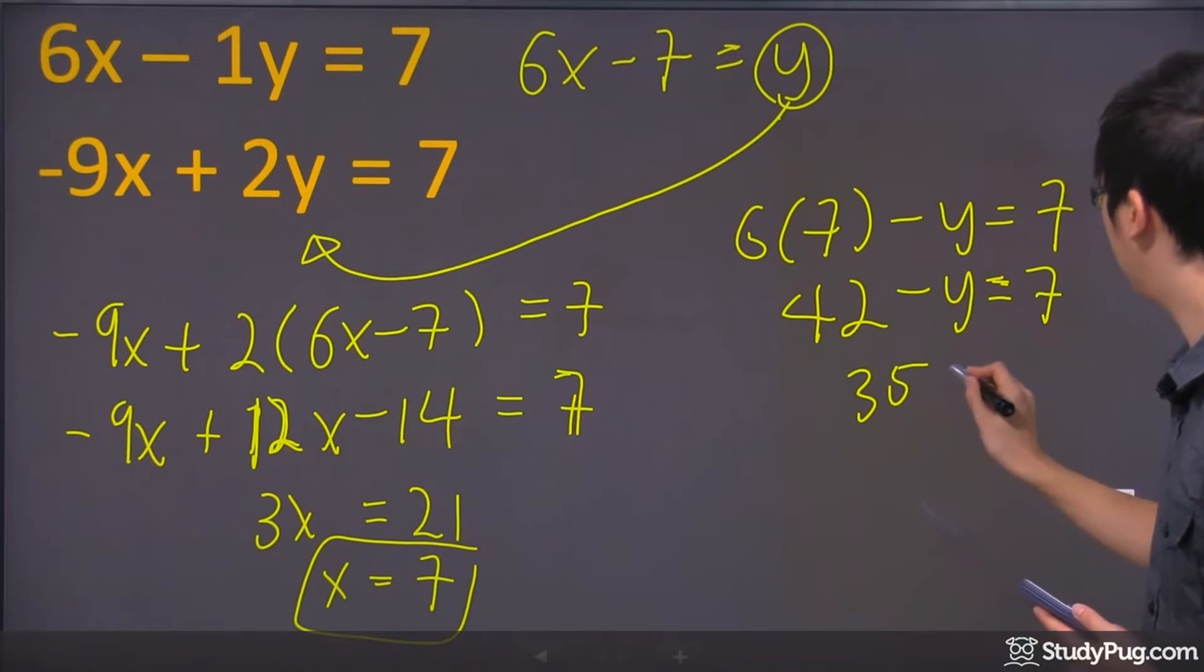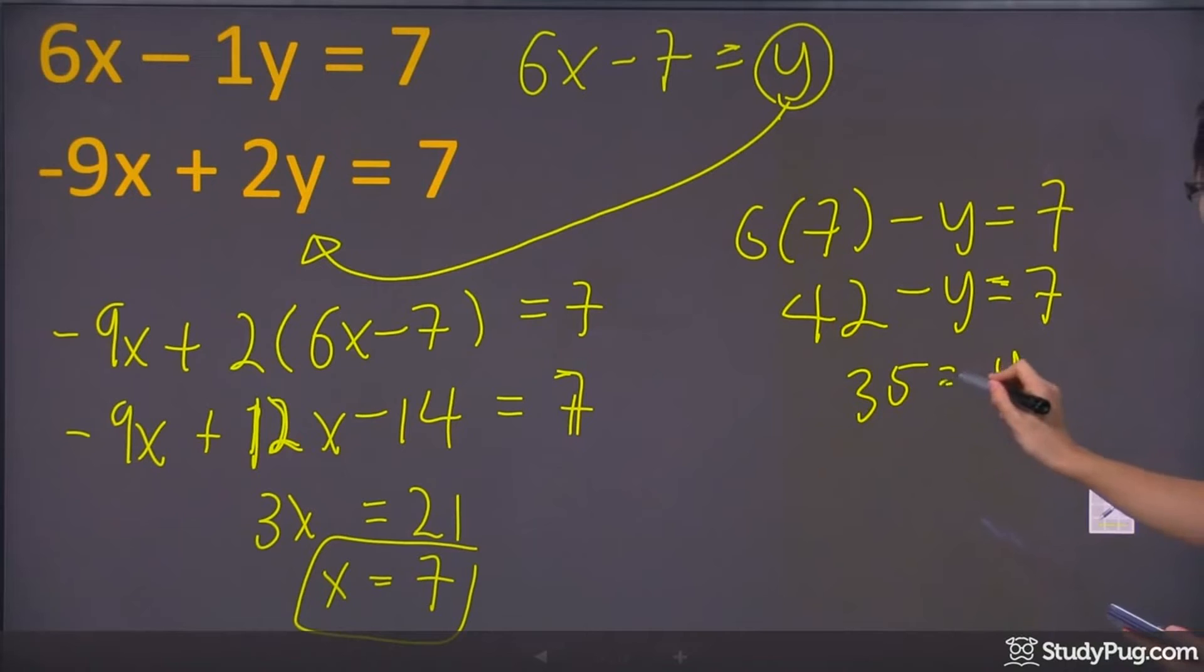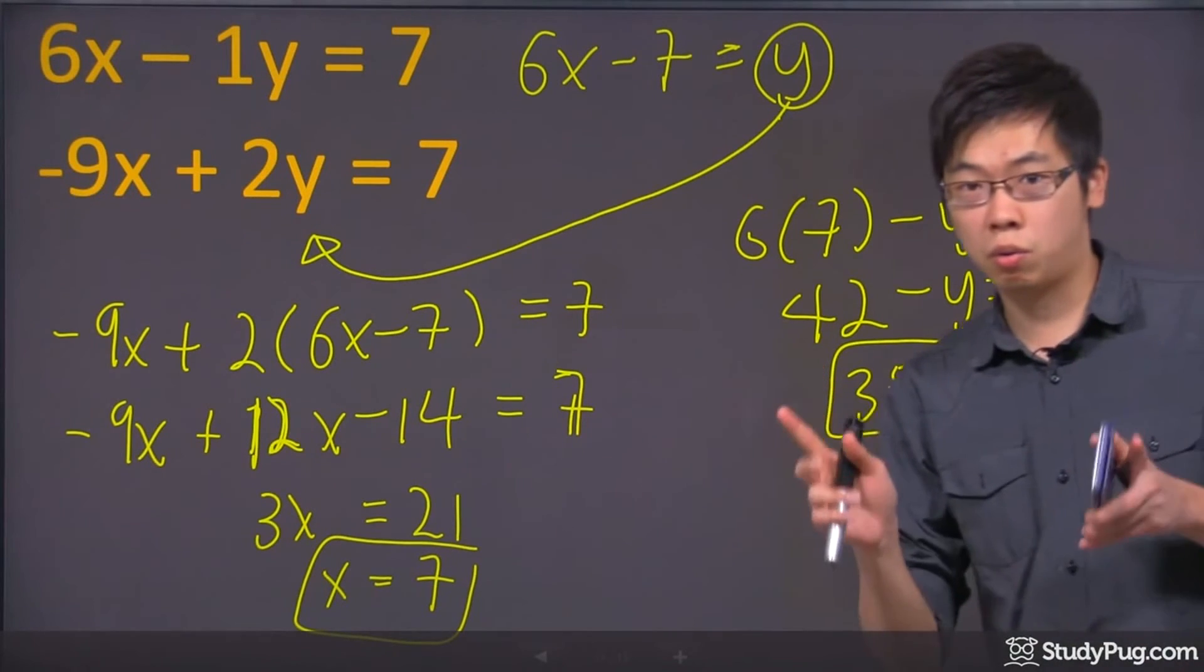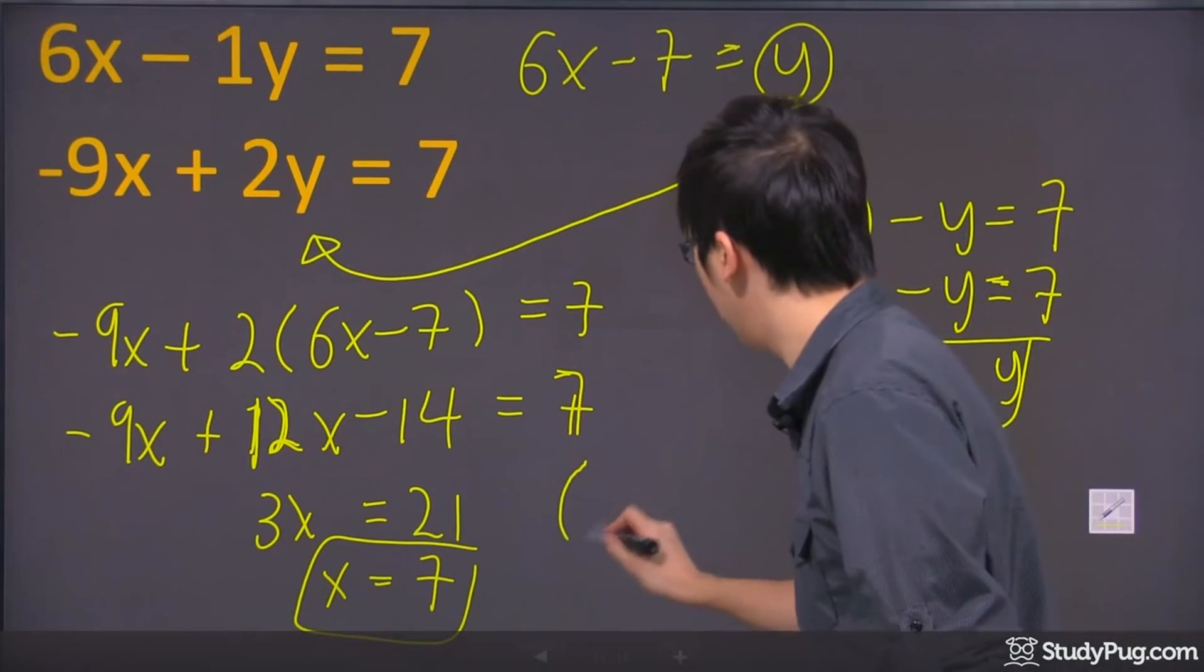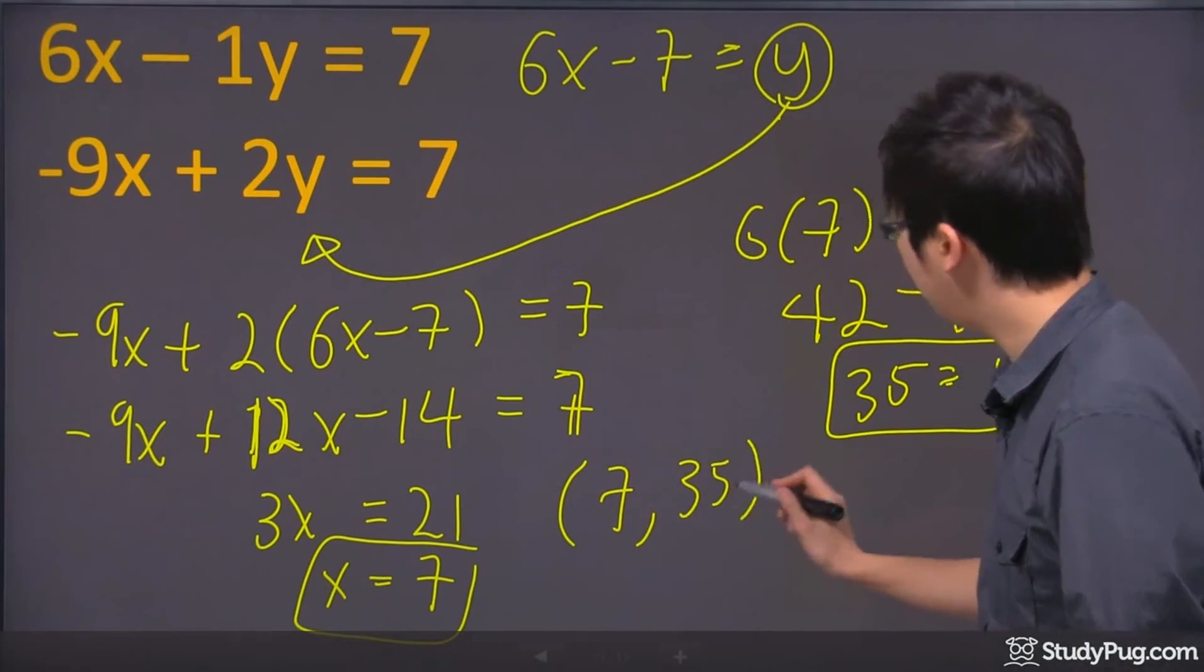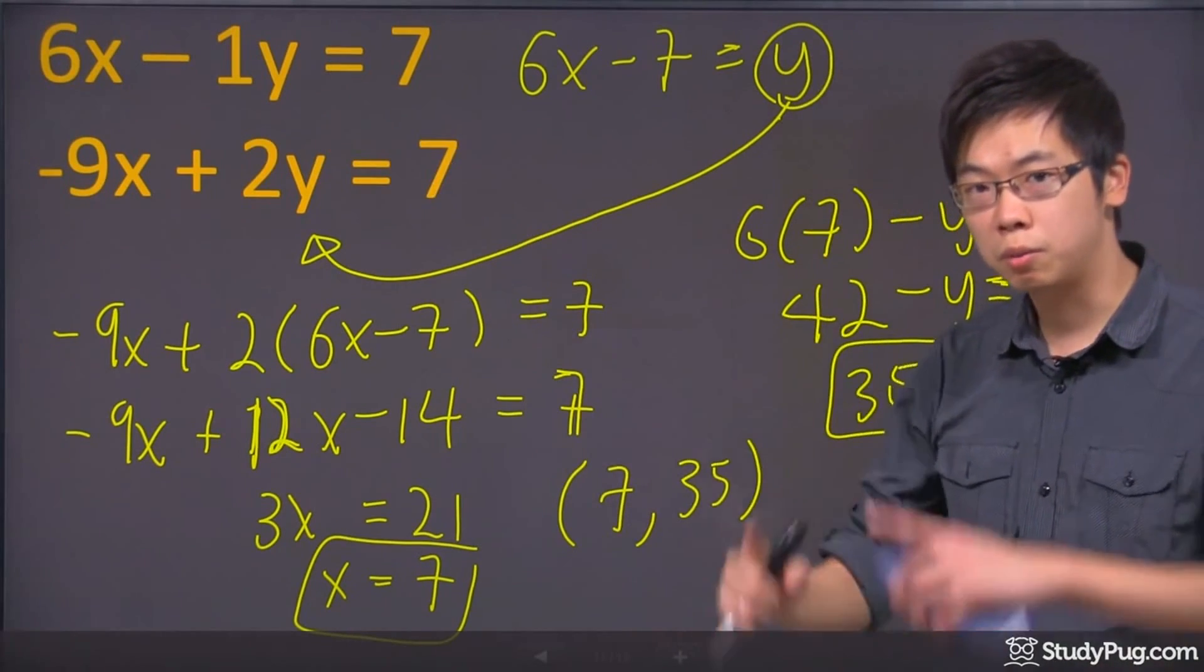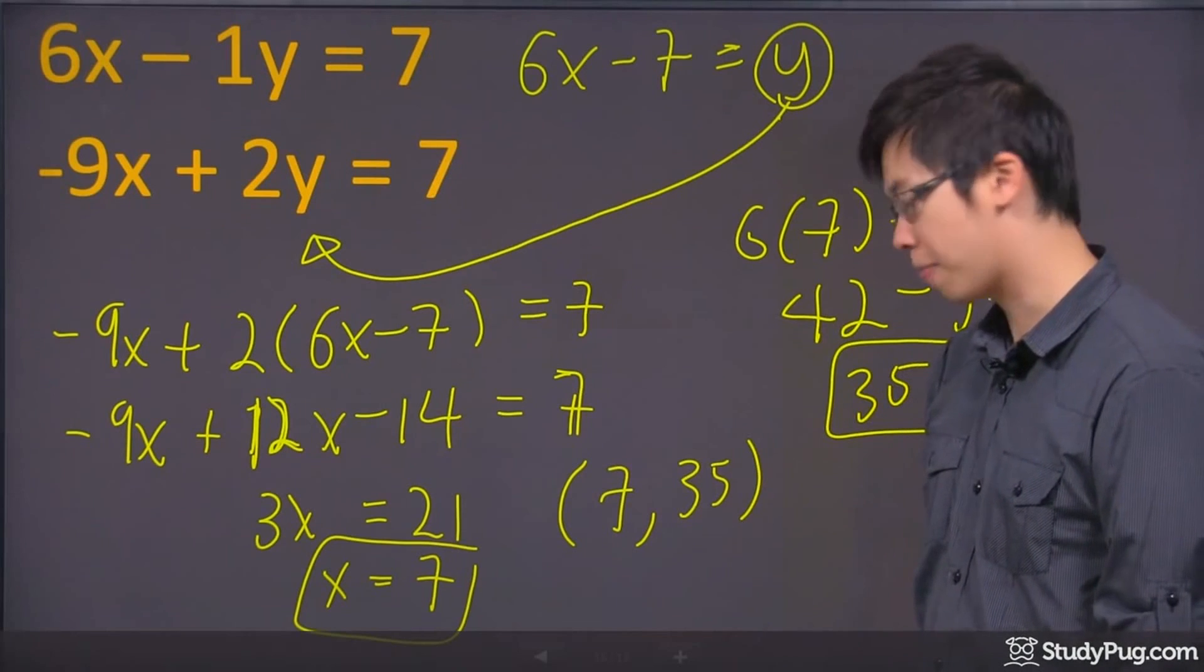35. I bring a 7 over and I bring a y over to the other side. So I got y equals to 35. Now if this is a coordinate on your graph, you will have to write down 7 and 35 is the point that these two equations going to intersect each other. Thanks for watching.